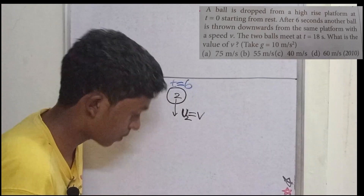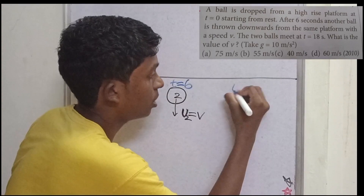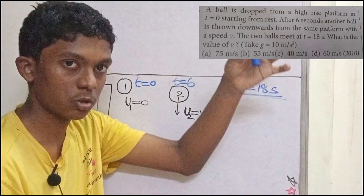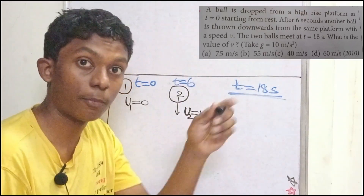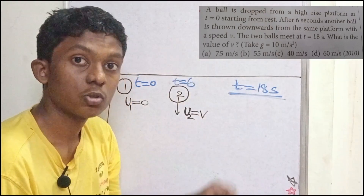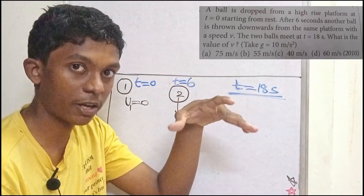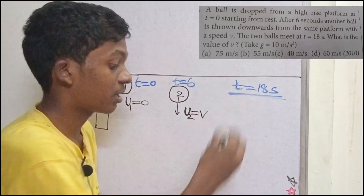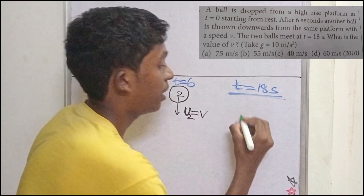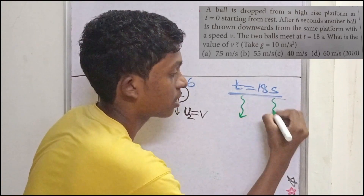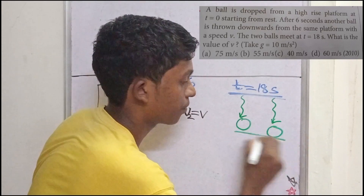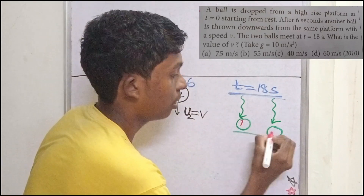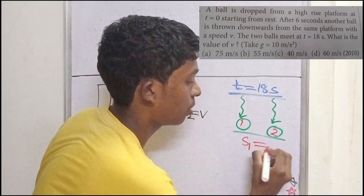The two balls meet at T equal to 18 seconds. Since they meet at the same point, the displacement of the first ball is equal to the displacement of the second ball. We need to find the value of V.